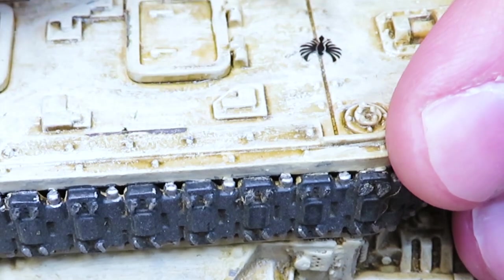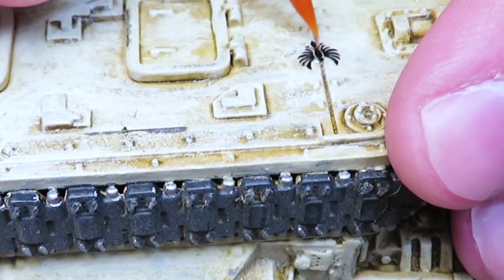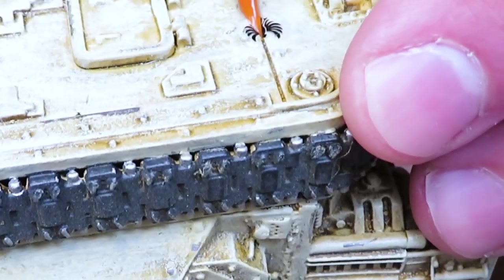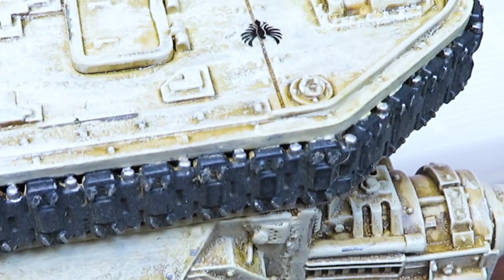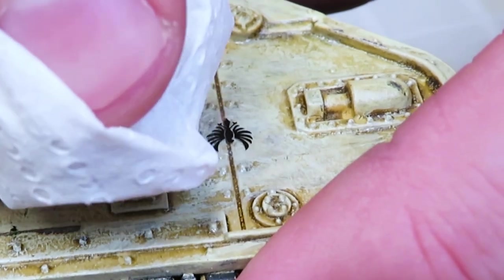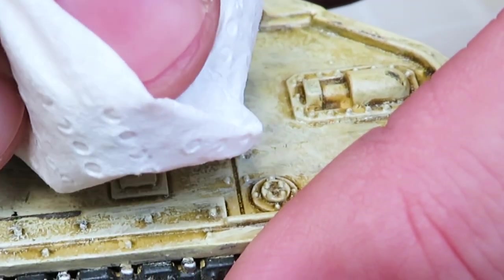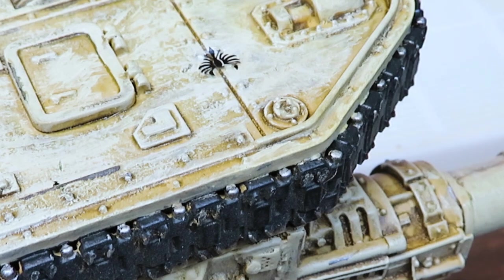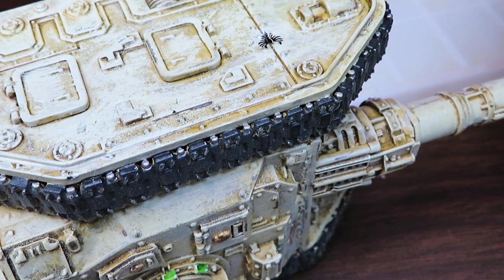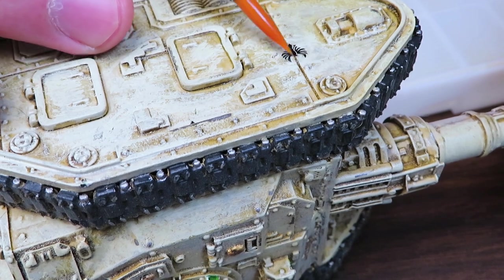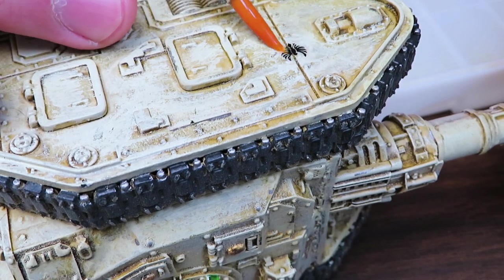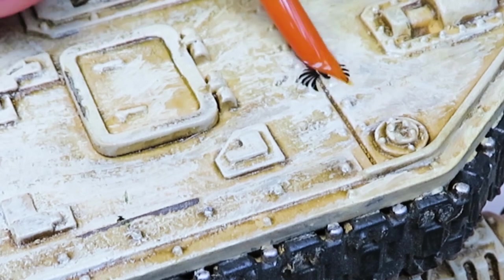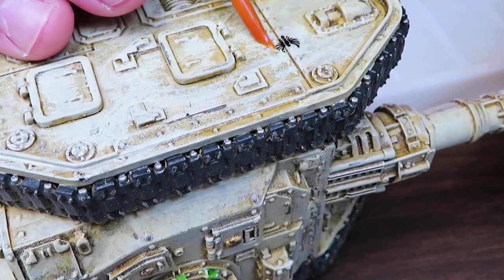Then we're going to position this decal over this crevice in these rivets. Okay. I'm going to get a little bit more of the Microset because this isn't a regular surface. And I'm going to brush it on this decal. And this is going to help soften this bad boy up so that it kind of molds over those rivets a little bit better.